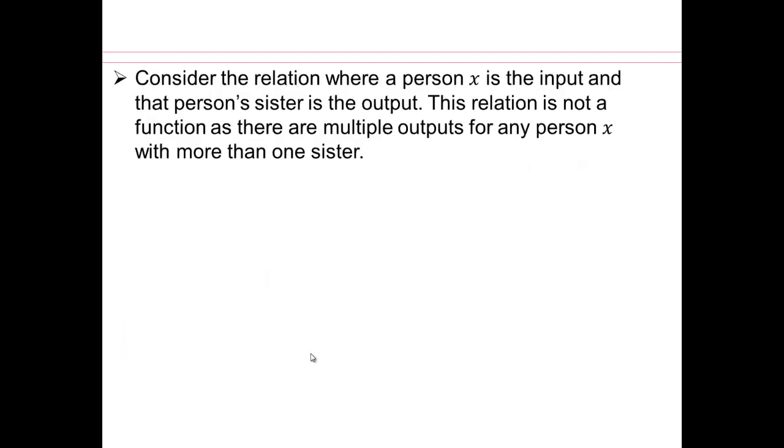So consider the relation where a person x is the input, and that person's sister is the output. This relation is not a function, as there are multiple outputs for any person x with more than one sister. So if you have a person with two sisters, then both of those sisters would be the output, making it not a function.